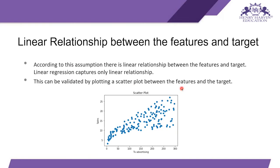To identify this linear relationship, you do a scatter plot between the features and the target — for example, sales versus TV advertisement. You plot the features and target to figure out whether there is a linear relationship. If it is valid, you can go to the next step and proceed with fitting the linear regression model.